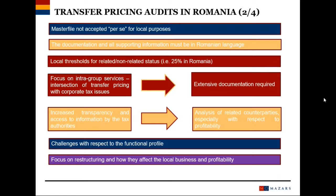There is also a focus on restructurings seen in the last years. If the Romanian company has gone through a restructuring — which can mean reduction of activity or increase of activity with several other functions performed by the local company — then the authorities are likely to start an audit to see the current situation, and transfer pricing is an important point on the agenda to see if the local company is actually remunerated for the new functions and risks that it has. To close, we also expect an increase in the number of transfer pricing audits in Romania mainly for the category of large taxpayers. A press release made by the local tax authorities about two weeks ago stated that the category of large taxpayers will be audited in the following period, using resources from all regional tax offices in Romania. Thank you.